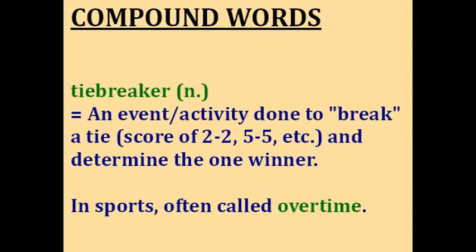Tiebreaker. When two teams are playing and the score ends in an equal number like two to two or five to five, this is called a tie. But in many games and contests, we need one winner. So an extra activity called a tiebreaker is done to break the tie and determine the champion. In sports like soccer and basketball, this is often called overtime.